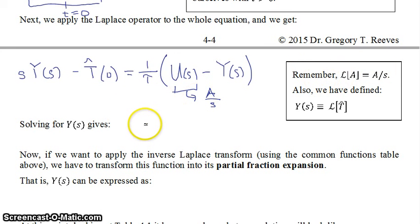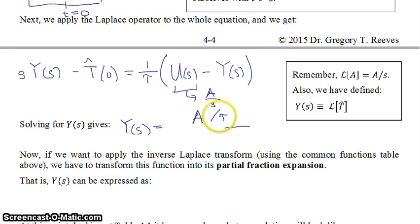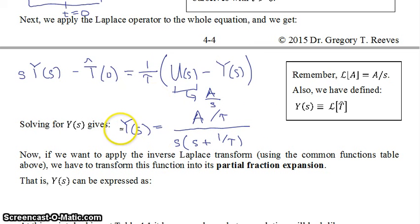Solving for Y(s) — it's now just an algebraic equation, not a differential equation. Y(s) equals (A over tau) divided by s times (s plus 1 over tau). This is the solution for the Laplace transform of T-hat.